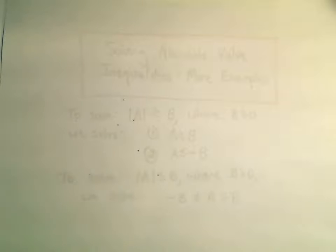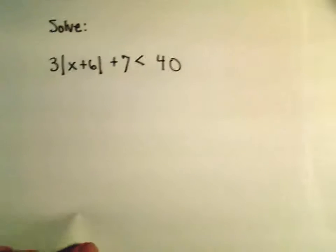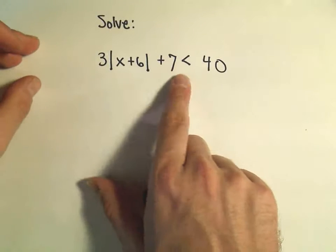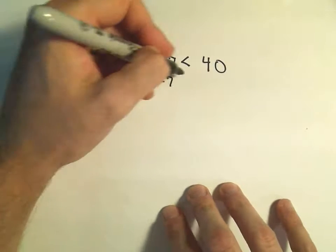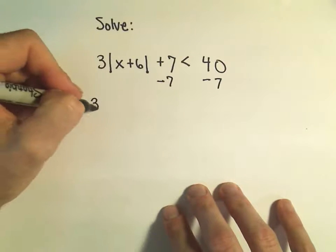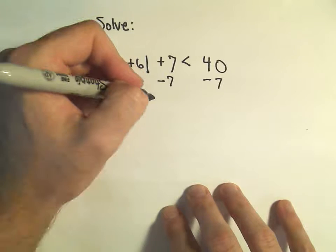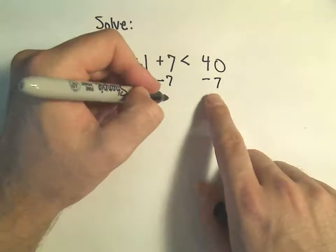So another little one here. Suppose we have 3 times the absolute value of x plus 6 plus 7. I'm going to subtract 7 from both sides first. That'll leave me with 3 times the absolute value of x plus 6. 40 minus 7 is 33.